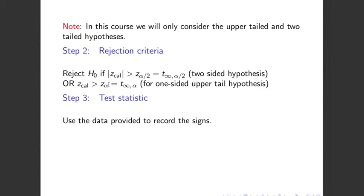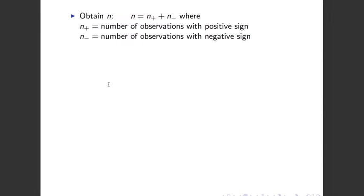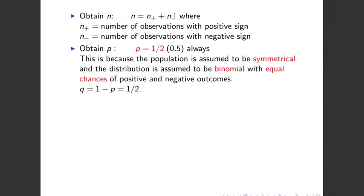Step three is the test statistic. We use the data provided to record signs based on m0. If an observation is greater than m0, we record it as a plus. If the observation is less than m0, we record it as a negative. If the observation equals m0, we ignore it completely. We obtain n, which is n-plus plus n-negative. We obtain p, which is always one half, because the population is assumed to be symmetrical and the distribution is assumed to be binomial — with equal chances of positive and negative outcomes. So if p equals one half, then q also equals one half, which is 1 minus p.